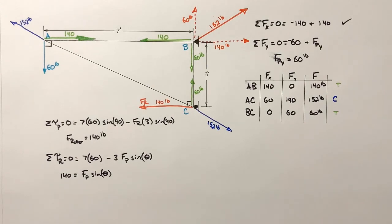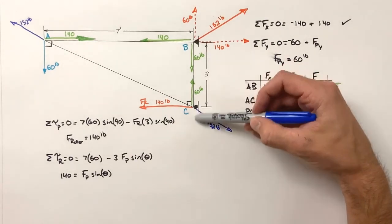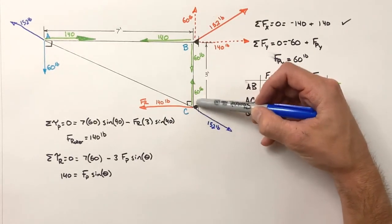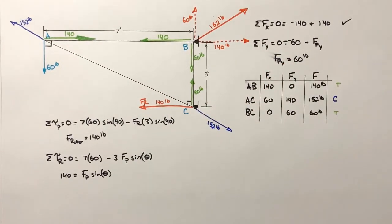And that, boys and girls, is how we go through and we solve a cantilevered truss in a situation where the load is parallel to the direction of freedom or the direction that a roller is free to move. And that's all for now. Thank you.